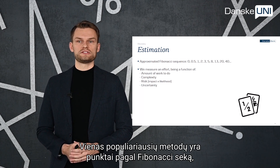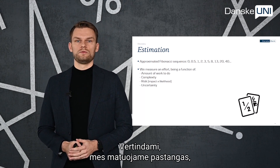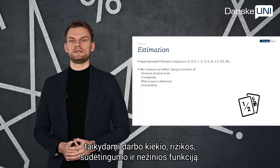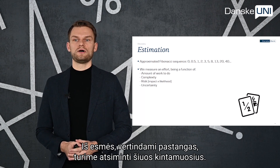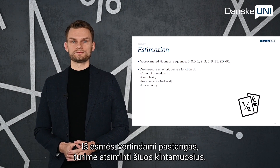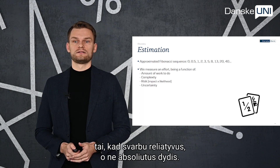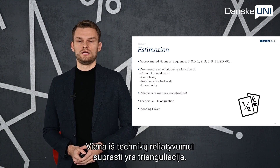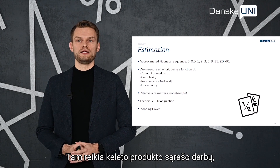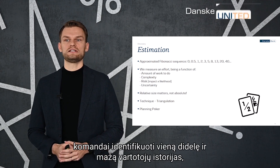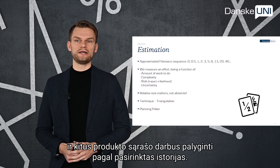One of the most popular methods is story points based on the Fibonacci sequence, because it prevents estimates from being too close to one another. When we do estimation, we measure effort, which is a function of amount of work, complexity, risk, and uncertainty — these variables should be taken into account when thinking about effort. Also, what is very important and takes time for teams to understand is that relative size matters, not absolute. One technique that helps to understand the relative concept better is triangulation: it requires a bunch of backlog items, the team identifies one small user story and one big one, then estimates the rest by comparing them to the chosen ones.